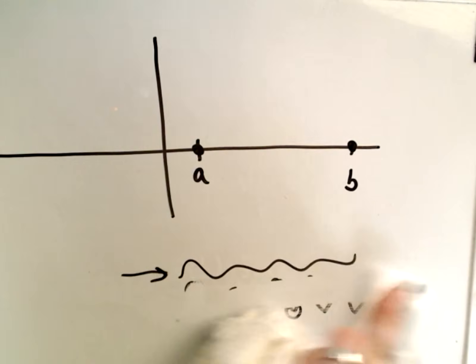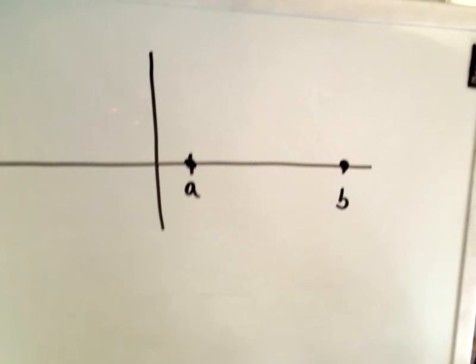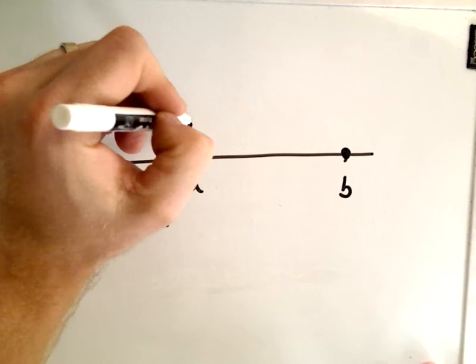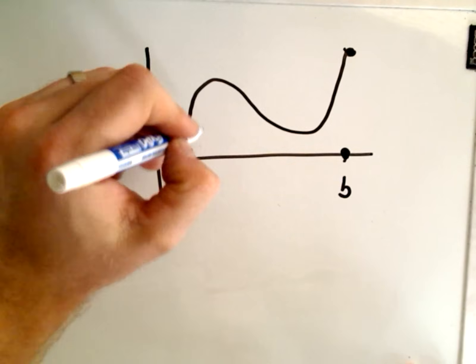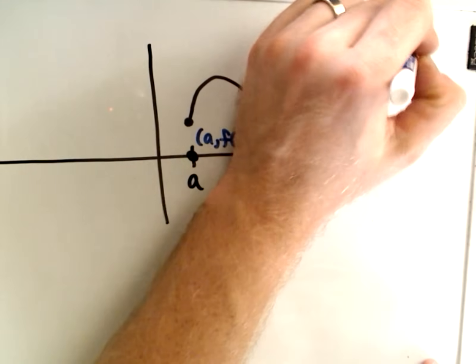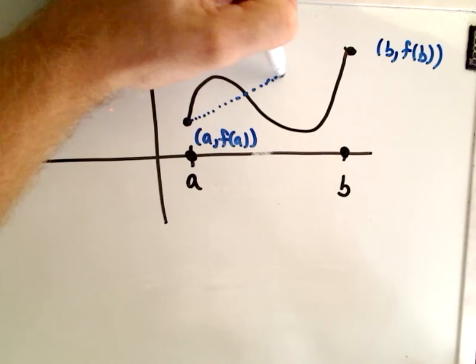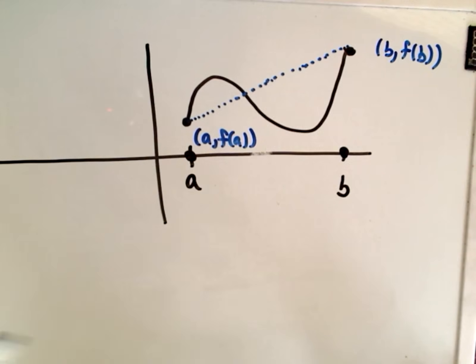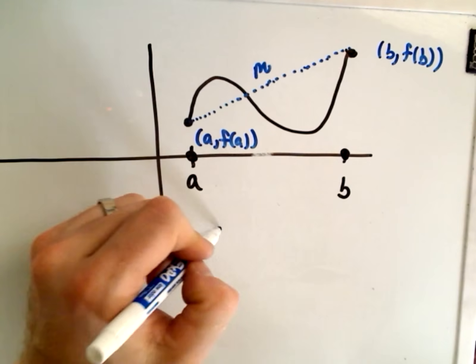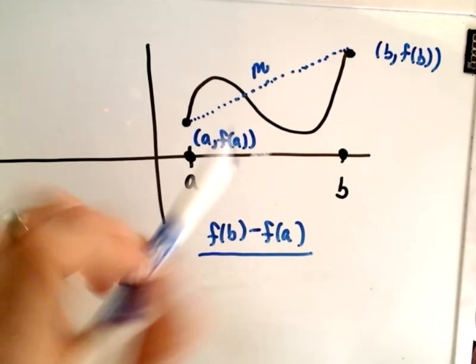So that means basically our function has to be continuous — one piece — and differentiable, which means it's got to be smooth. Those are conditions one and two, so I'm just going to draw a generic graph. Here's one point, and suppose it goes up to here. This would be the point (a, f(a)) on the left side, and on the right this would be the point (b, f(b)). If you connect a line between the endpoints, the slope of that line, we'll call it m, is the change in y over change in x: f(b) minus f(a), over b minus a.